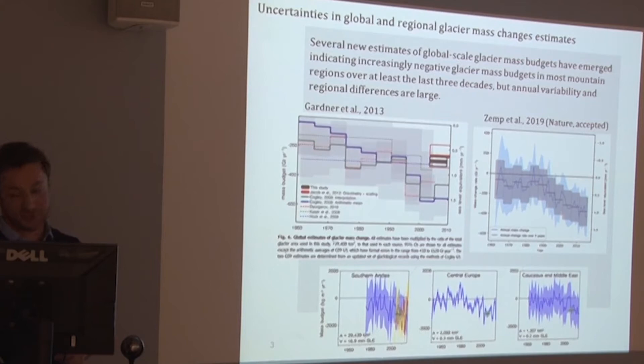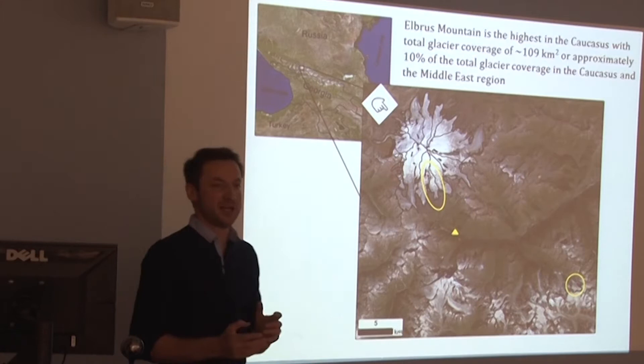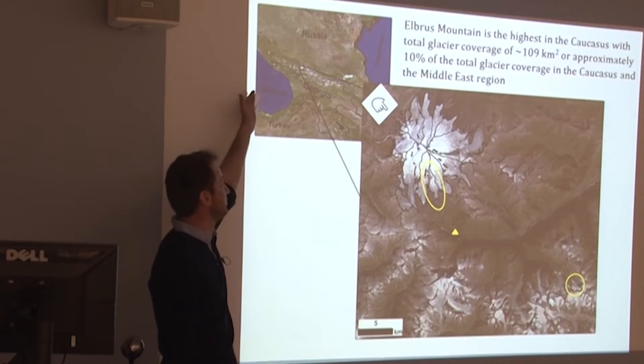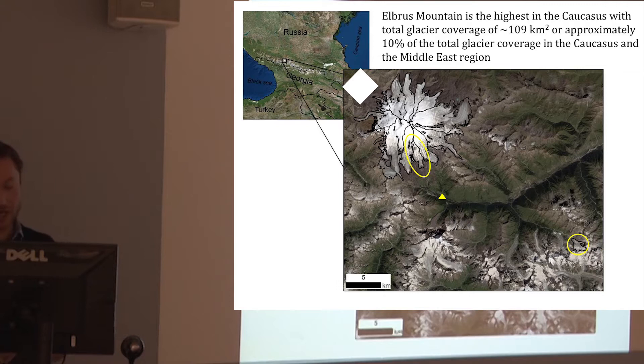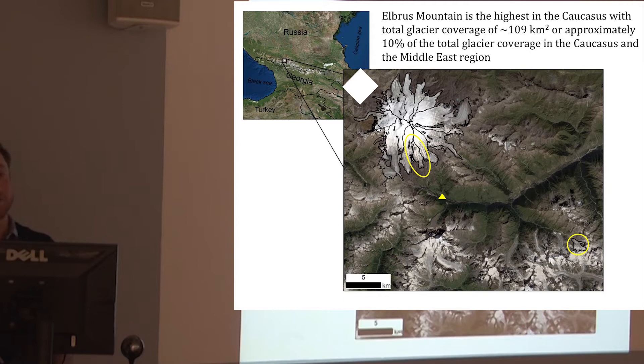So where is Elbrus? I gave a talk two years ago about Elbrus Mountain. It's in the Caucasus Mountains, between the Black and Caspian Seas. These are the large glaciers here — actually the largest glacier system in the Caucasus. Its area is about 10% of the total glacier coverage in the Caucasus. It's a volcano, and the meltwater feeds many famous rivers which flow down the valleys.